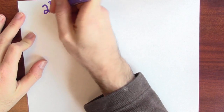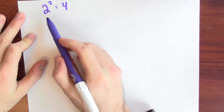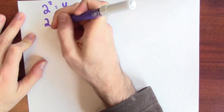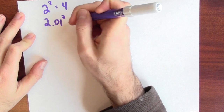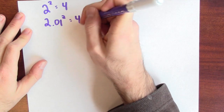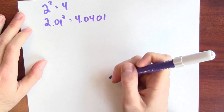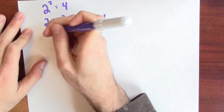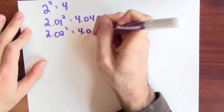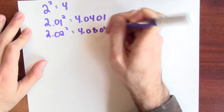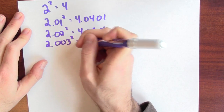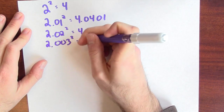Let's start by noting that 2 squared is 4, and I'm going to wiggle the 2 and see how the 4 wiggles. Instead of plugging in 2, let's plug in 2.01. 2.01 squared is 4.0401. 2.02 squared is 4.0804. And 2.003 squared is 4.012009.